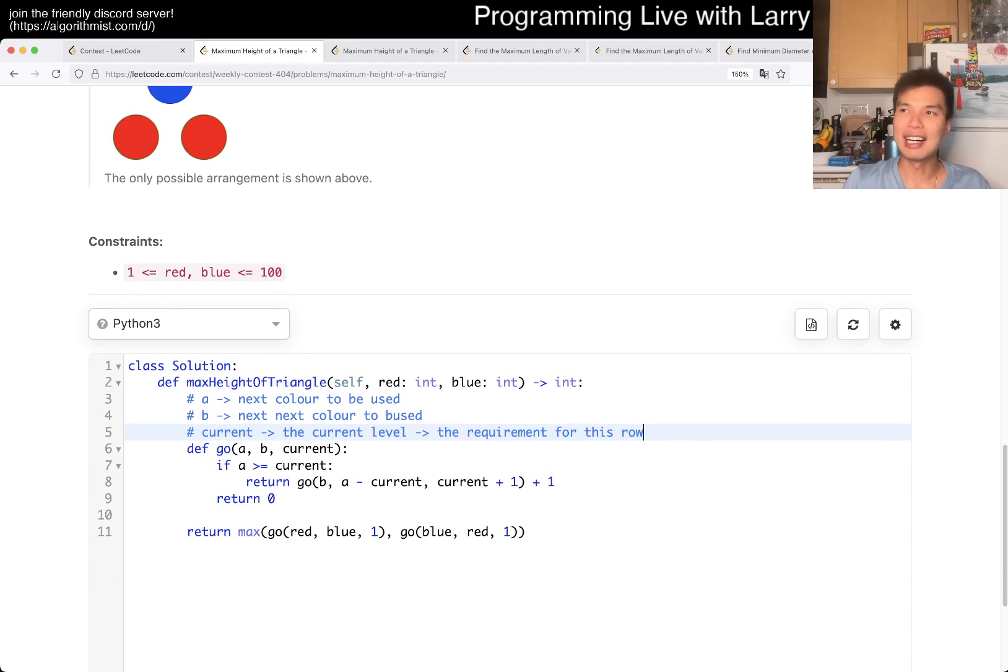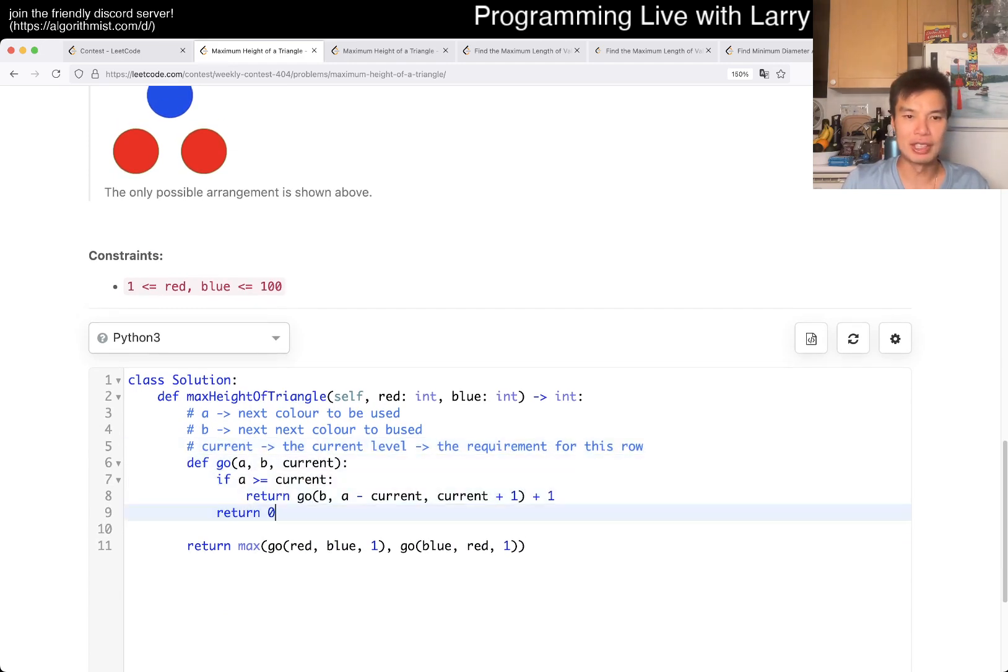So A is the next color to be used. B is the next color to be used. And current is the current level, which is also the requirement for this row, right? So that's basically the idea. I unfortunately—I mean, hopefully this makes sense, just recursion, right? So if we have enough, then we go to it and then we just increase the level and we move B up. Otherwise, we return zero because then we're done. And you also increase one for the level. So my wrong answer is because I had these as zeros. Because I guess recursion is always natural to think of zeros and zero indexing. But I just didn't think about it, honestly. I was rushing it and I didn't think about the edge cases and this is what happened.